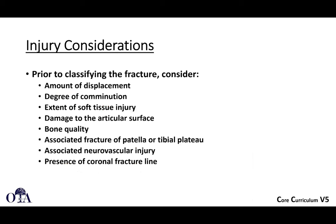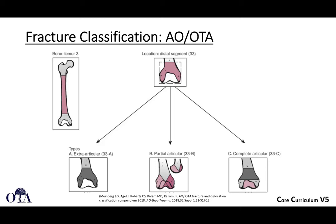Prior to classifying fractures, consider amount of displacement, degree of comminution, soft tissue injury, bone quality — whether they have great bone or severe osteoporosis — associated injuries, and whether a coronal fracture line is present. Distal femur fractures are a nice application of the AO/OTA fracture classification, which works well for understanding fracture patterns and determining treatment.